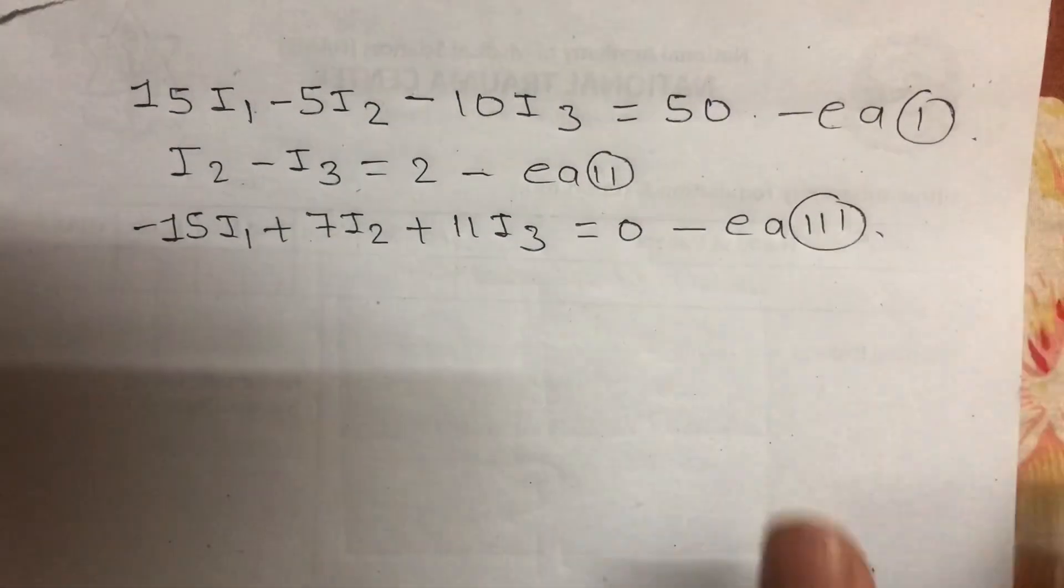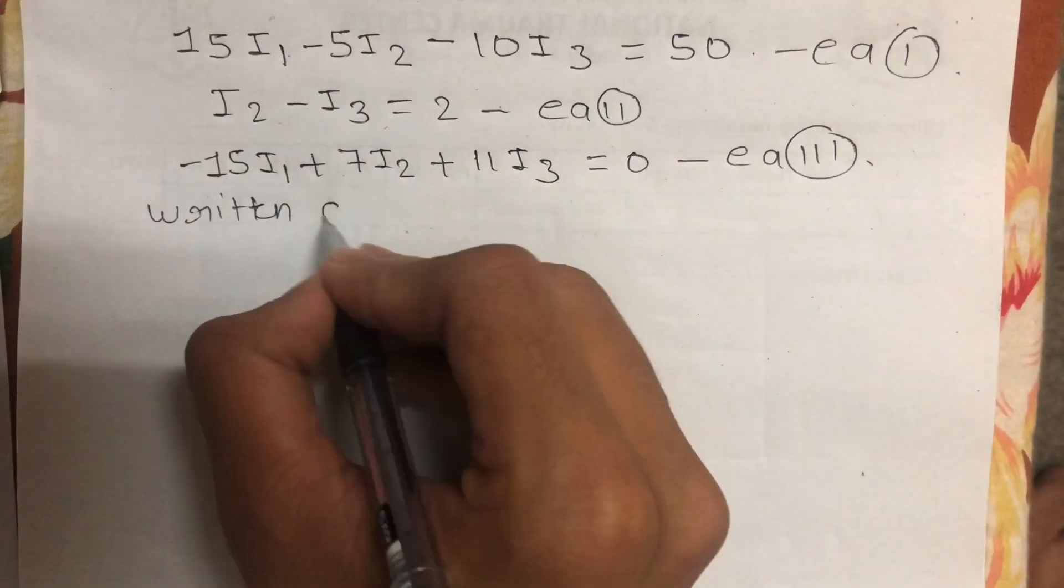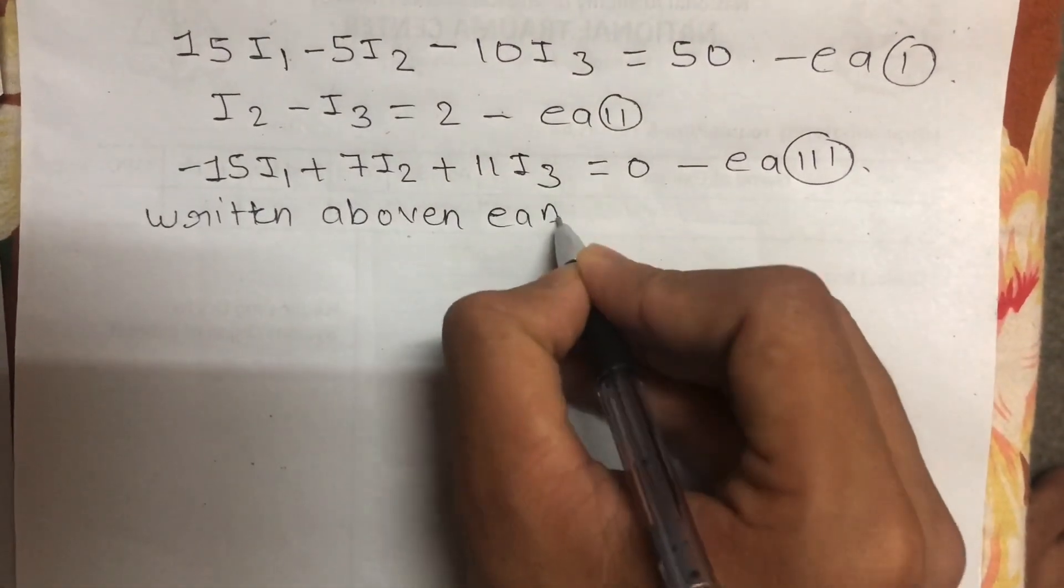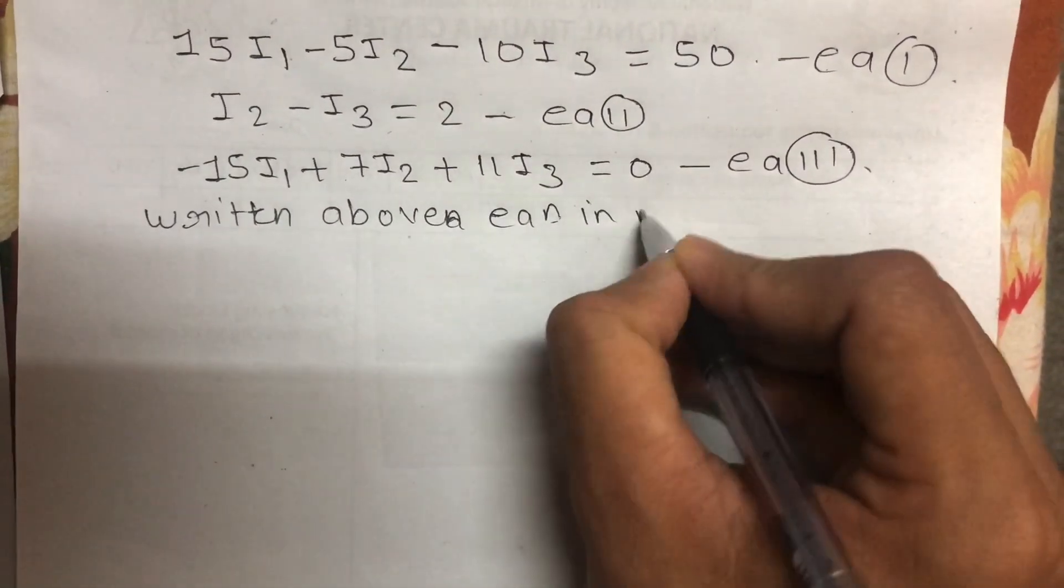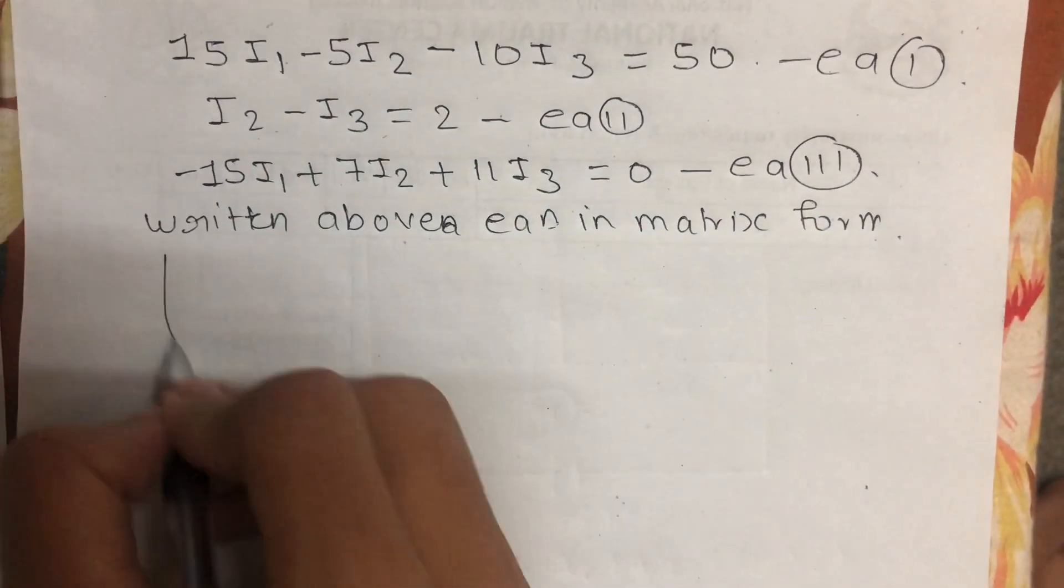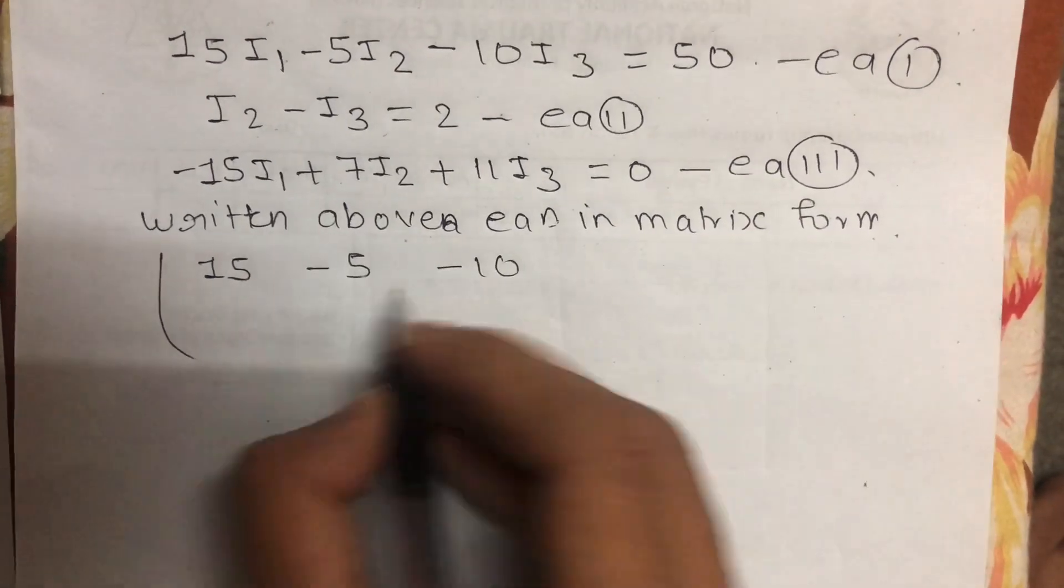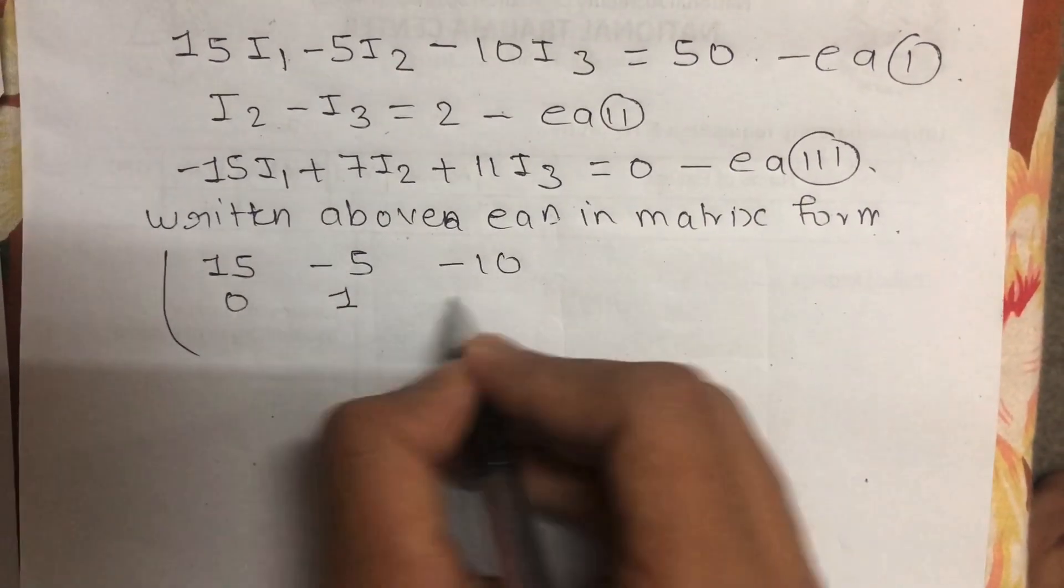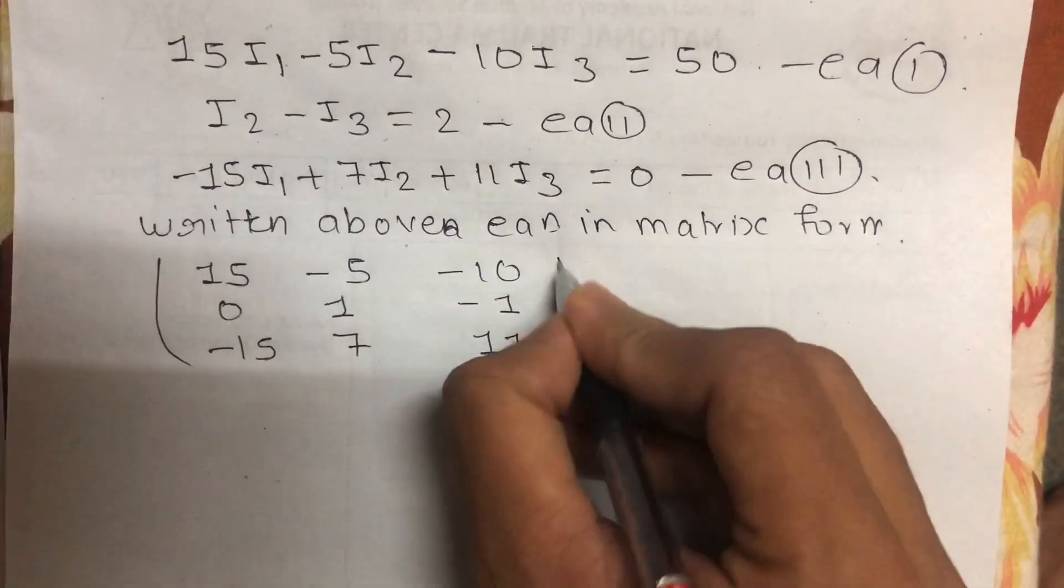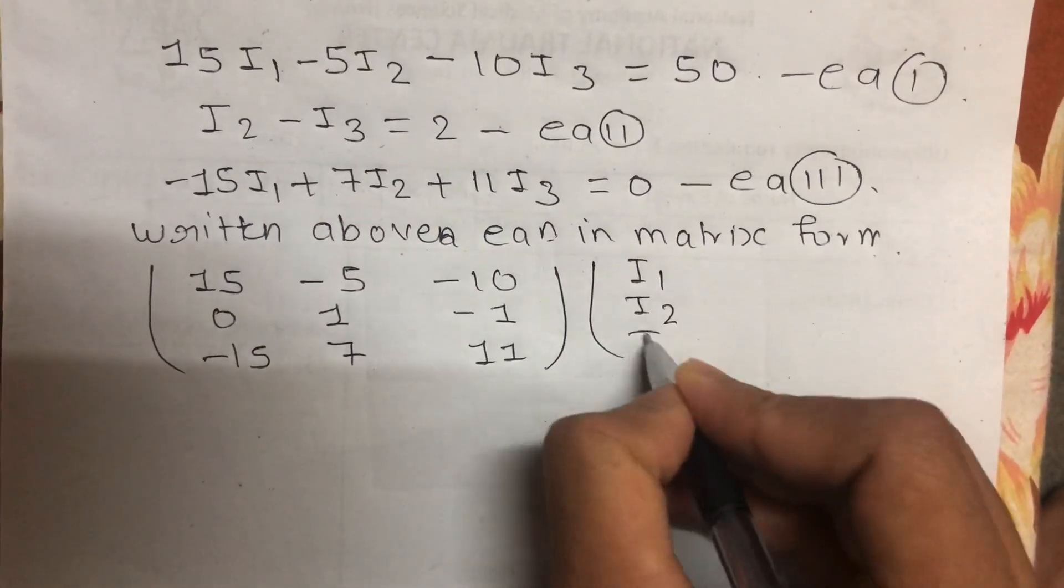Writing in matrix form: the matrix is [15, -5, -10; 0, 1, -1; -15, 7, 11] multiplied by [I1; I2; I3] equals [50; 2; 0].